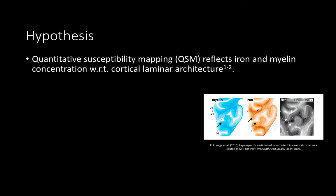Quantitative susceptibility mapping has been shown to reflect varying iron and myelin content within human brain tissue, particularly with respect to cortical laminar architecture. Subtle magnetic susceptibility variations within the tissue accrue to the MRI phase and can be quantified by QSM methods through deconvolving the phase signal. In vivo studies have reported observing susceptibility changes along the cortical ribbon but are limited in resolution due to constraints on acquisition time.